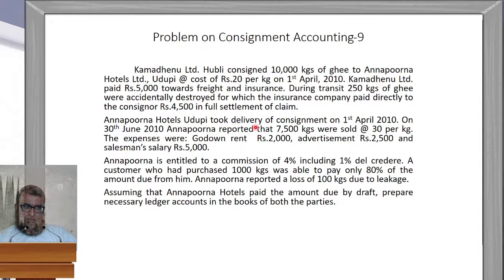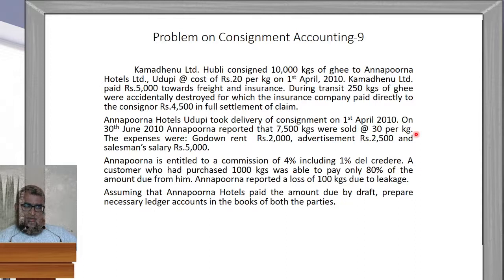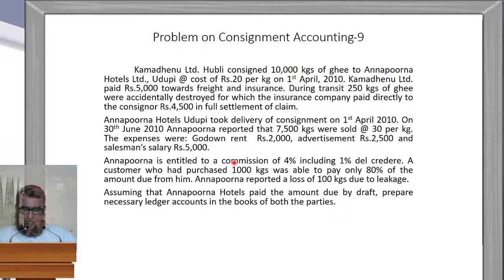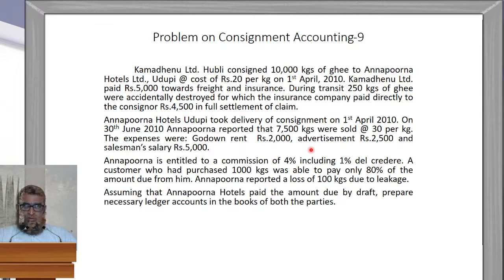Annapurna Hotels, Udupi, took delivery of the consignment on 1st April 2010. On 30th June 2010, Annapurna reported that 7,500 kgs were sold at Rs. 30 per kg. Expenses incurred were: godown rent Rs. 2,000, advertisement Rs. 2,500, and salesman's salary Rs. 5,000 — totaling Rs. 9,500. These are expenses spent by the consignee, so they will come in the consignment account as 'By Annapurna Hotels Account.'